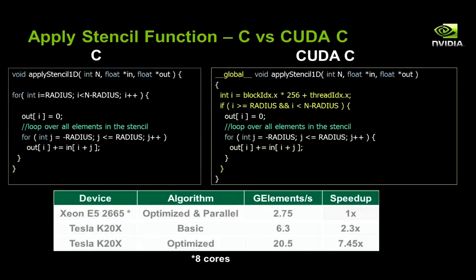However, with a little bit more time, we could optimize the code by using shared memory and processing multiple elements per thread. When we do this, we get 20.5 giga elements a second, which is a 7.45x speedup overall.